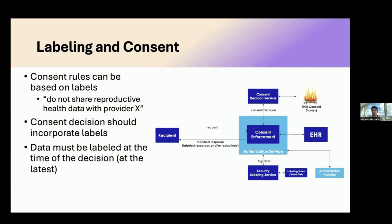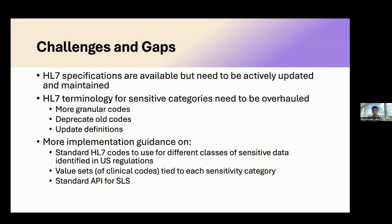The diagram on screen shows how this works at transaction time. When a request is received, the general authorization service invokes the consent enforcement piece, which triggers the security labeling service to apply labels on the requested data. This enables the consent decision service to determine what data can be shared — whether the transaction should be declined entirely or specific data items should be removed. For example, it is possible to take a bundle, remove resources not authorized for sharing, and still respond with an OK response sharing the permitted data.